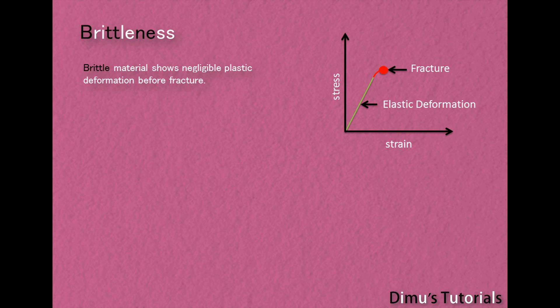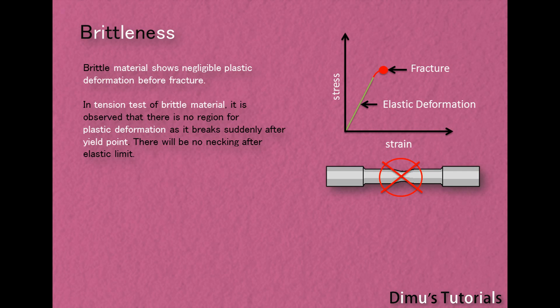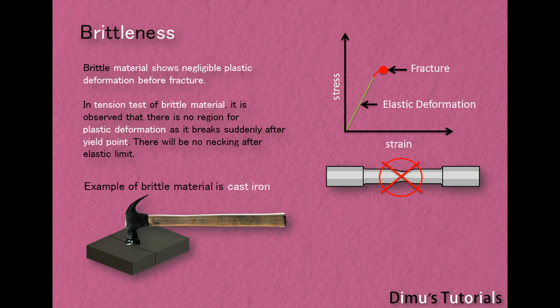Brittleness. Brittle material shows negligible plastic deformation before fracture. In the tension test of brittle material, it is observed that there is no region for plastic deformation. As it breaks suddenly after yield point, there will be no necking after the elastic limit. An example of brittle material is cast iron.